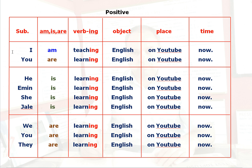Let's look at the examples. I am teaching English on YouTube now — I am doing this action right now at the speaking time. You are learning English on YouTube now, from me; you are watching this lesson on YouTube now. He is learning English on YouTube now. Amin is learning English on YouTube now. She is learning / Jale is learning English on YouTube now. We are learning, you are learning, and they are learning English on YouTube now.